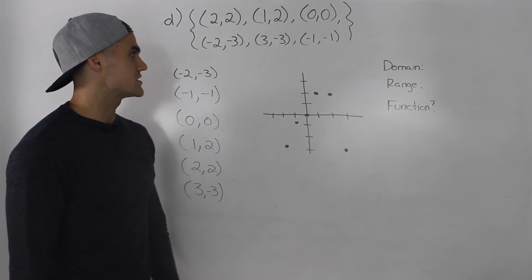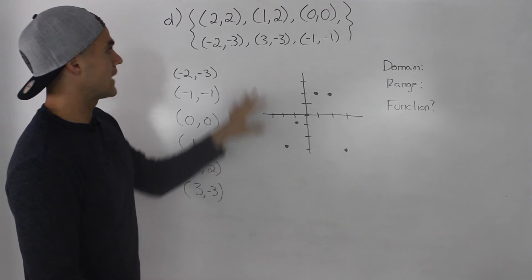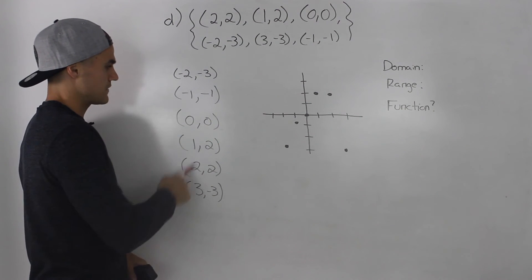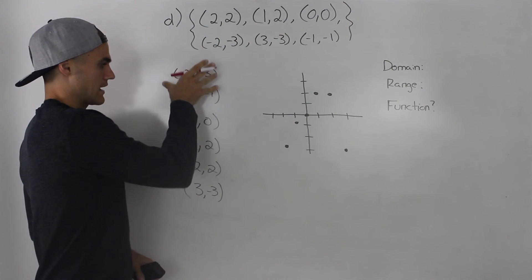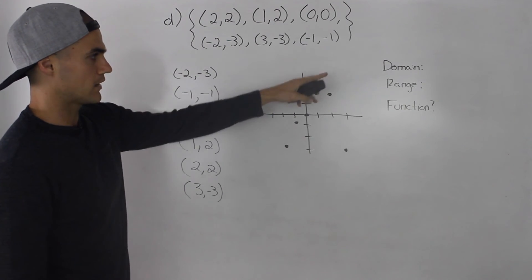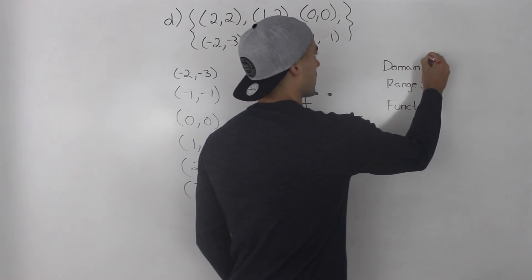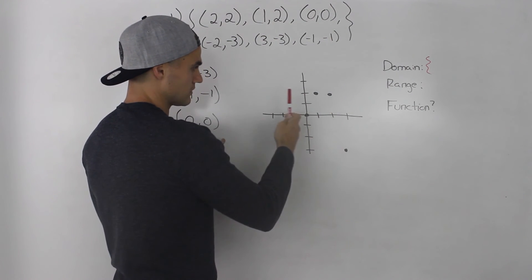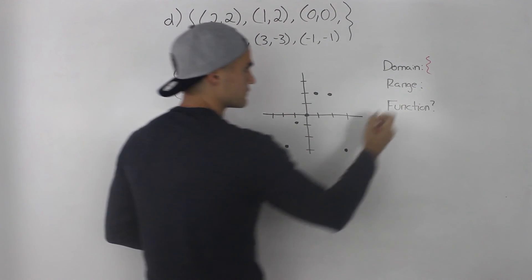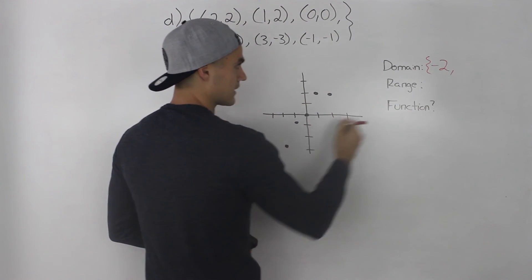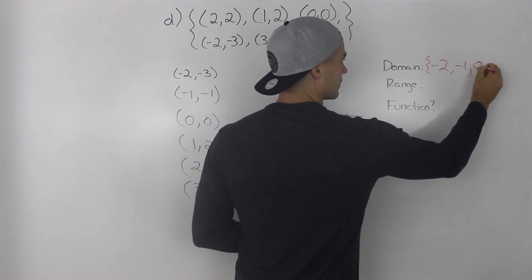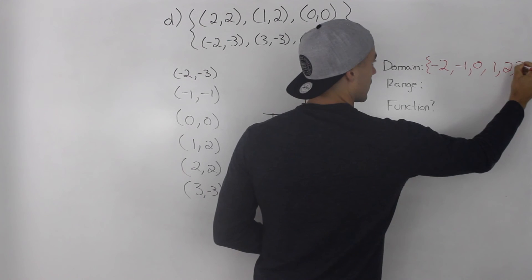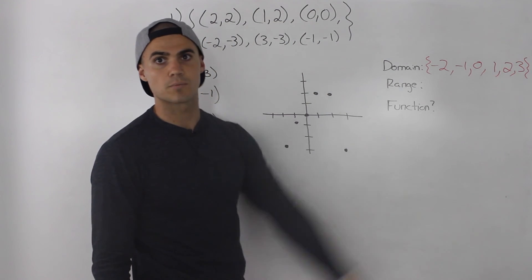Moving on to Part D — I erased everything to give more room. I had a list of coordinates and wrote them out from lowest to highest x value, then plotted them on the graph. For the domain, going left to right from the lowest x value to highest: negative 2, negative 1, 0, 1, 2, and 3. None of them repeat, so that is our domain.